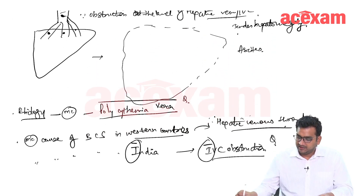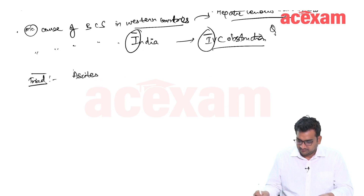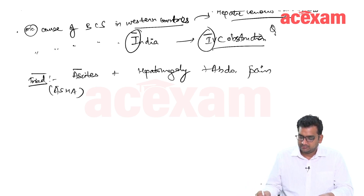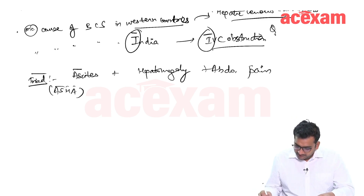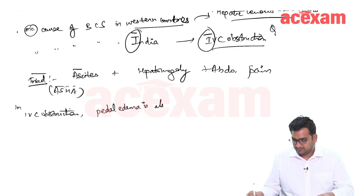There is tender hepatomegaly and ascites. This is the triad of Budd-Chiari syndrome: ascites, hepatomegaly, and abdominal pain. This goes by the mnemonic ASHA. In IVC obstruction, there is also presence of pedal edema noted.